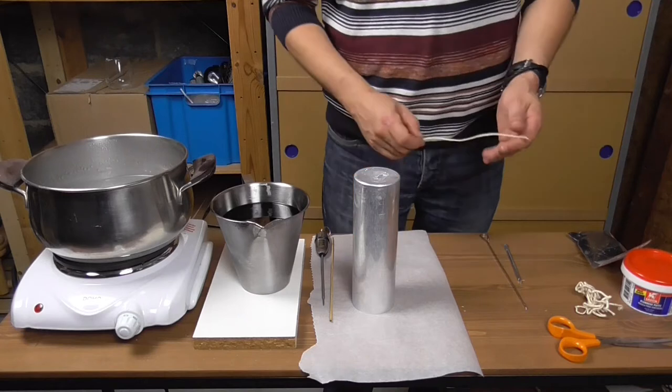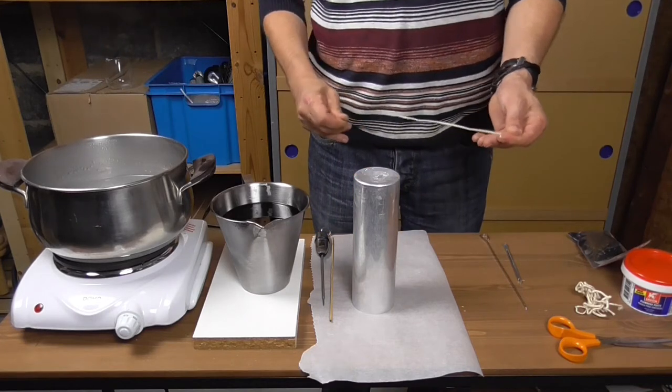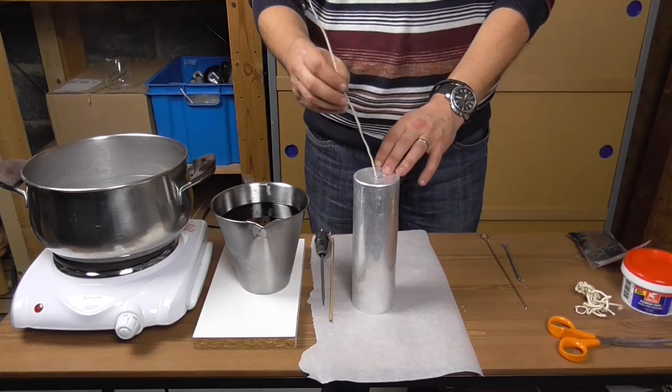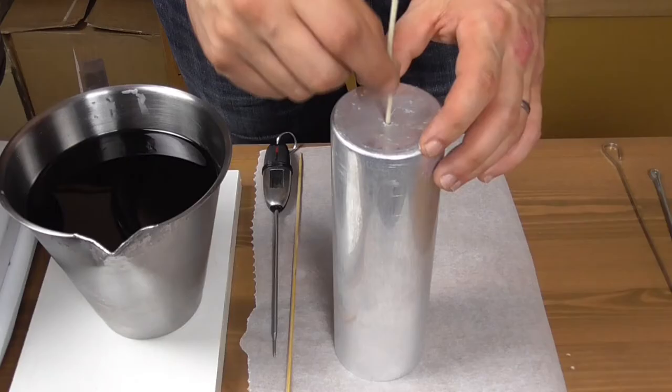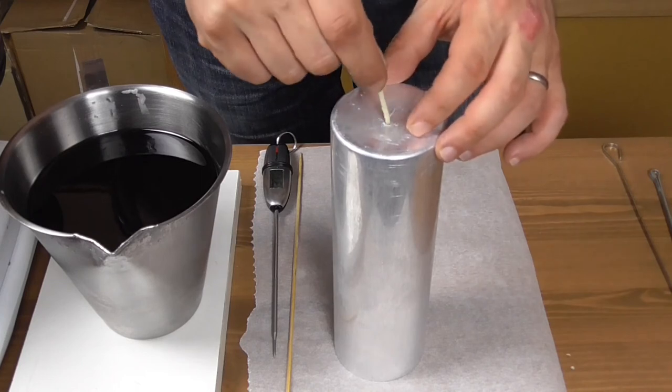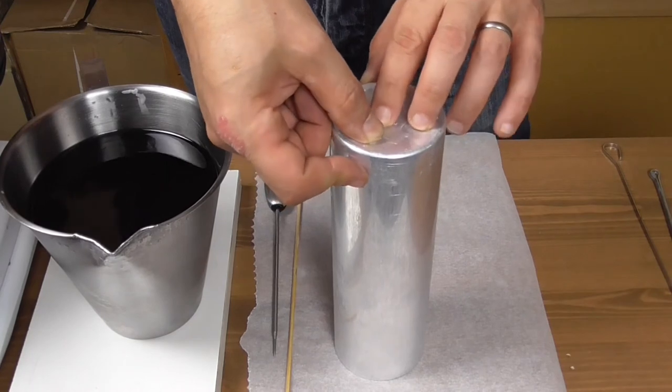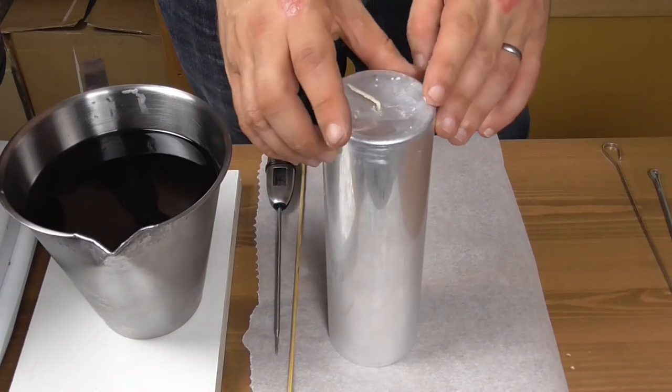Turn the mold upside down. Remove any excess wax from the ends of the wick and thread it through the hole at the bottom of the mold. Fold the last 2 centimeters of wick against the bottom of the mold. This will help keep the wick in place for what follows.